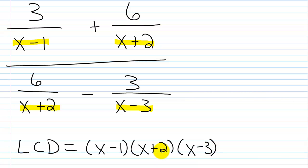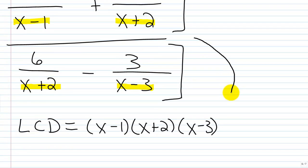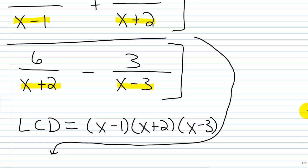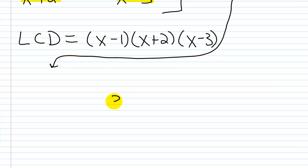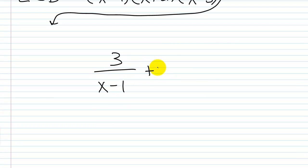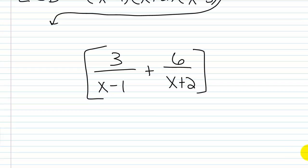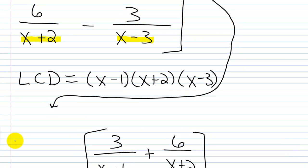Now what I want to do is multiply the LCD by the numerator of the complex fraction and by the denominator of the complex fraction separately. I'll start with the numerator: 3 over (x minus 1) plus 6 over (x plus 2), multiplied by (x minus 1)(x plus 2)(x minus 3).